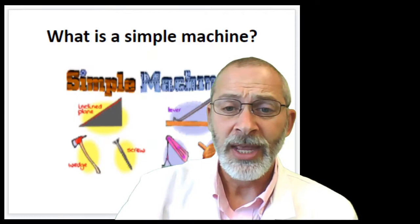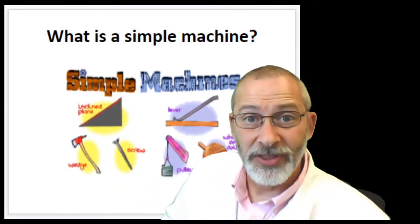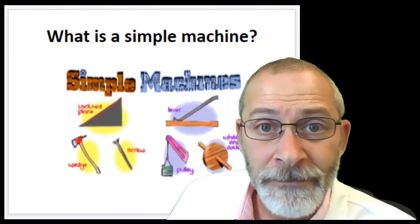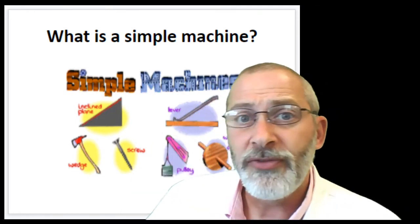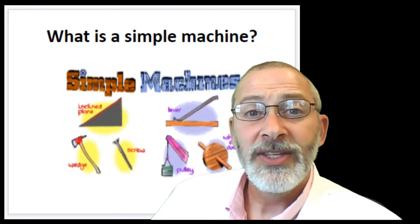Hello, students. We are continuing where we left off yesterday. Yesterday we talked about machines and efficiency and mechanical advantage. Today we are going to go through a list of six simple machines, and then I'm going to quiz you at the end of this lesson. So pay attention and use your noggins to help you figure out different kinds of simple machines.